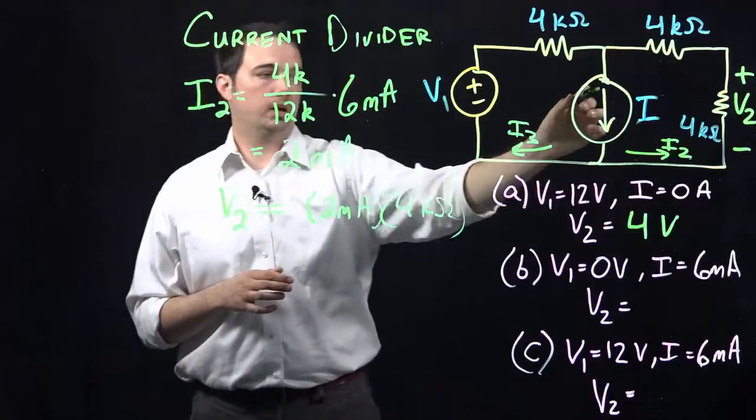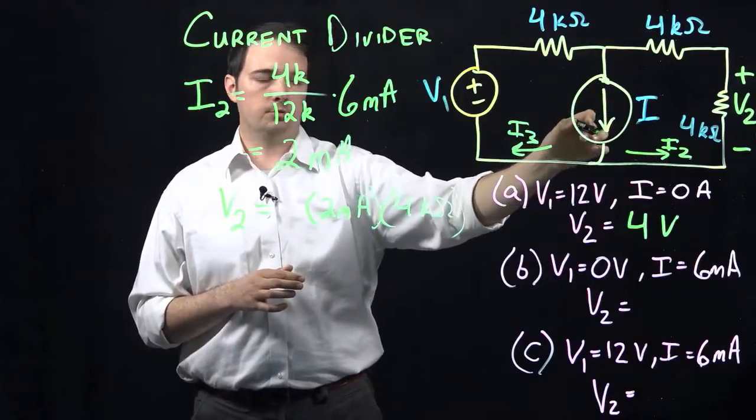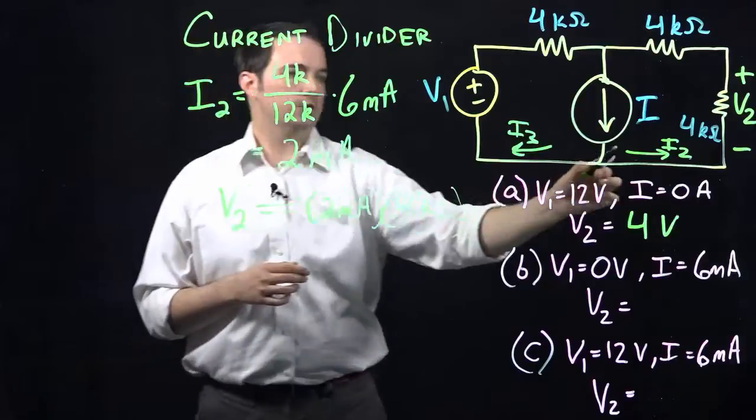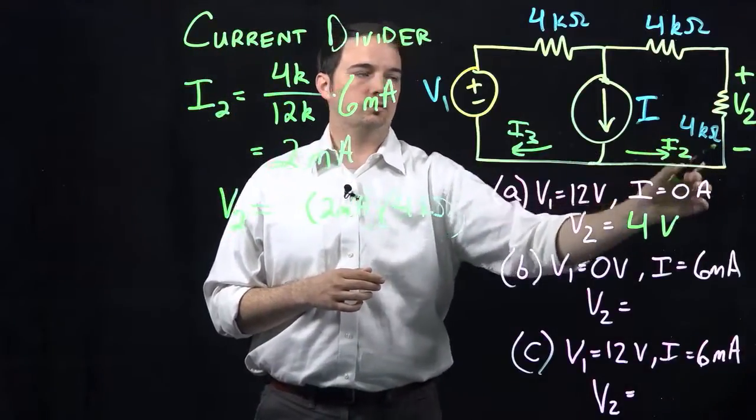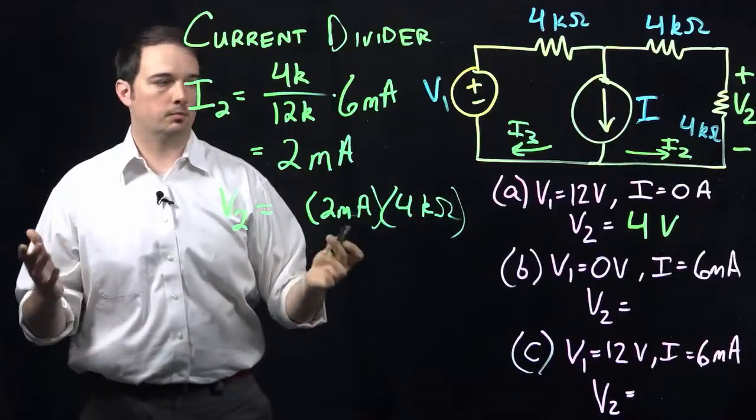because we've indicated it based on the original direction given to us in the problem, is showing that current traveling into the negative side of this voltage that has been defined for us in the problem, right?